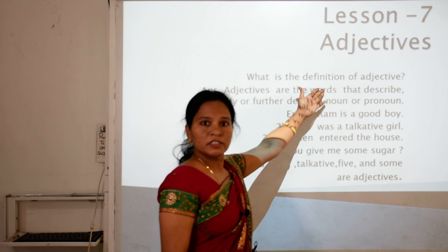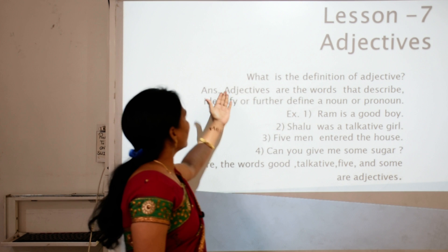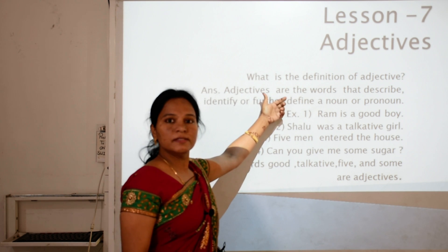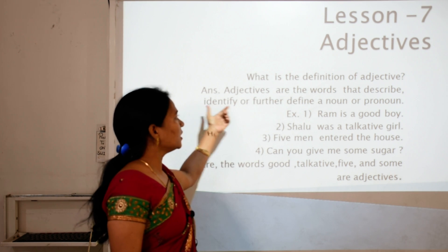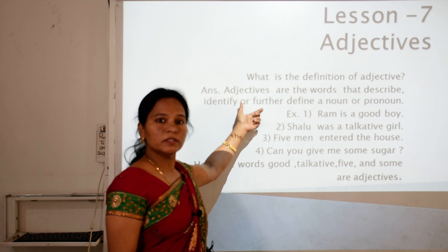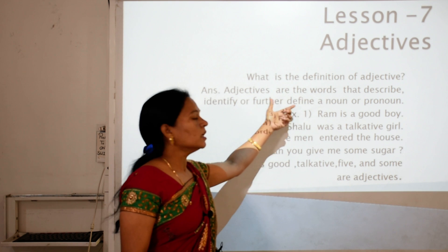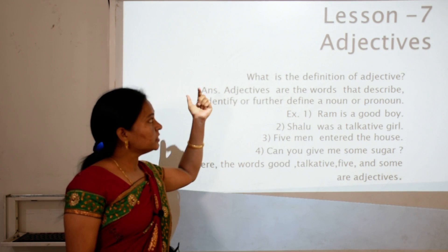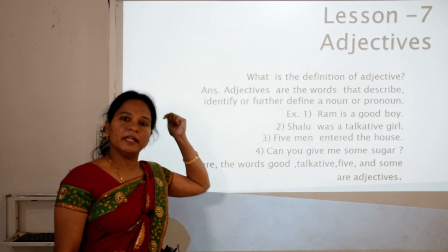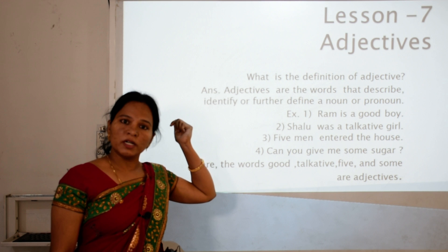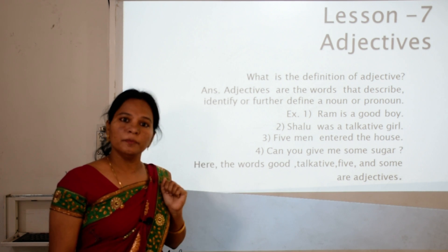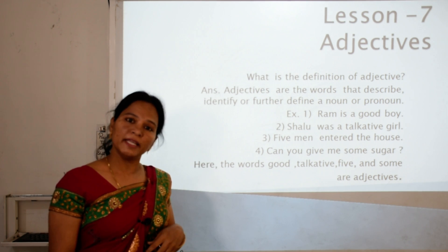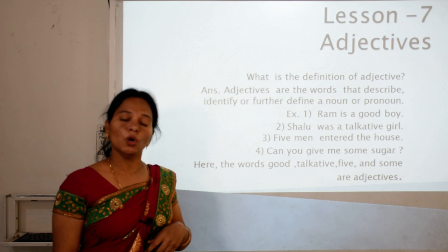What is the definition of an adjective? Adjectives are the words that describe, identify, or further define a noun or pronoun — such as a person, place, animal, or thing.